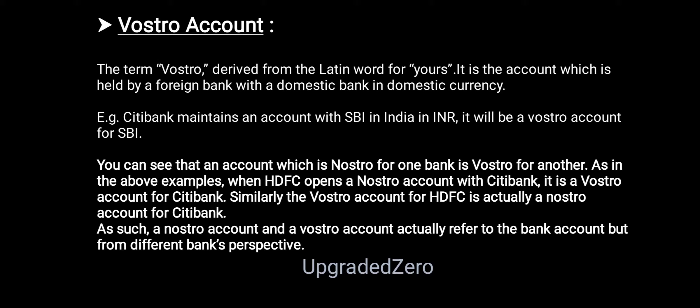To recap the first example: suppose an Indian bank maintains an account at Citi Bank USA — that is a Nostro account for us. Now when Citi Bank maintains an account at our Indian bank, that is a Vostro account for us. But from Citi Bank's perspective, the first example is a Vostro account for them, and the second example is a Nostro account for them, because they are maintaining an account at our place. You can see that an account which is Nostro for one bank is Vostro for another bank.